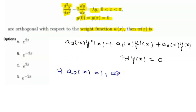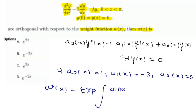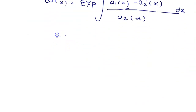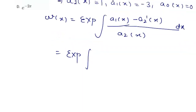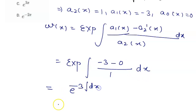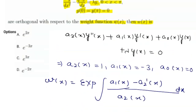Comparing, a₂(x) = 1, a₁(x) = −3, and a₀(x) = 0. The weight function is w(x) = exp(∫[a₁(x) − a₂′(x)] / a₂(x) dx). Since a₁(x) = −3, a₂′(x) = 0, and a₂(x) = 1, this becomes exp(∫−3 dx) = e^(−3x). So option B, w(x) = e^(−3x), is the correct answer.